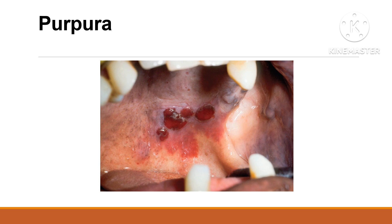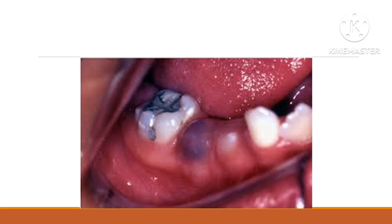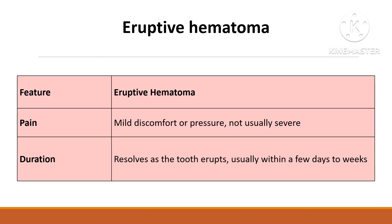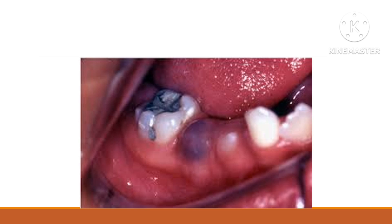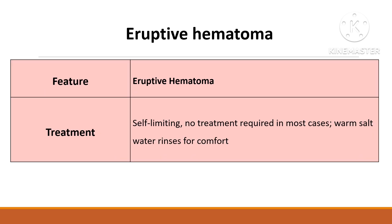Eruption hematoma is associated with children when primary or permanent teeth are emerging through the gums. It results from trauma to the soft tissues around the erupting tooth; as the tooth moves toward the gum surface, it can damage blood vessels, leading to bleeding and hematoma formation. It appears as a swelling or bump near the gum line and can cause discomfort, though it is typically not severe unless there is significant pressure or infection.